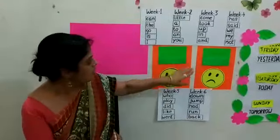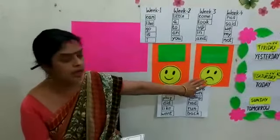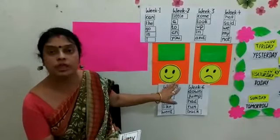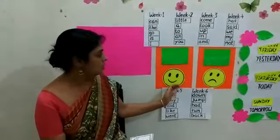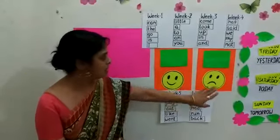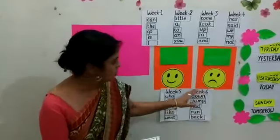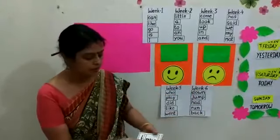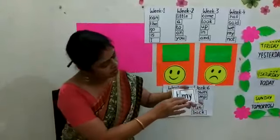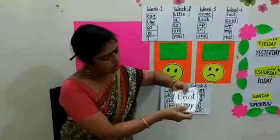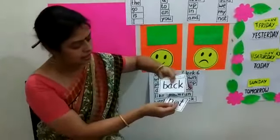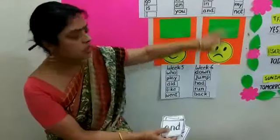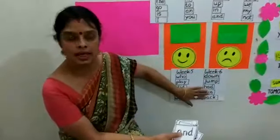So here is a two-game plan. This is what we usually do in class. This is a smiley face and this is a sad face — to encourage the child to read the words. I have made flash cards here; you can make these very easily at home. These are the jumbled words from the sight words.